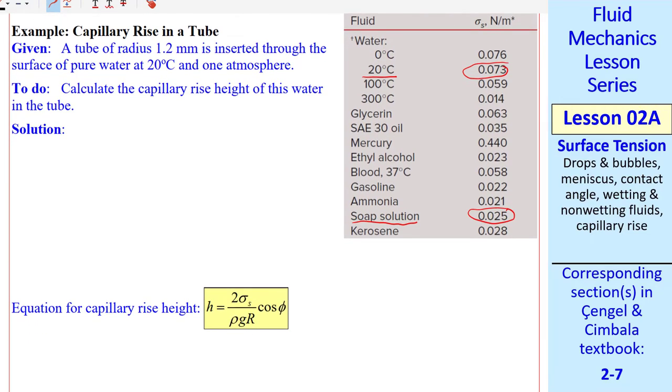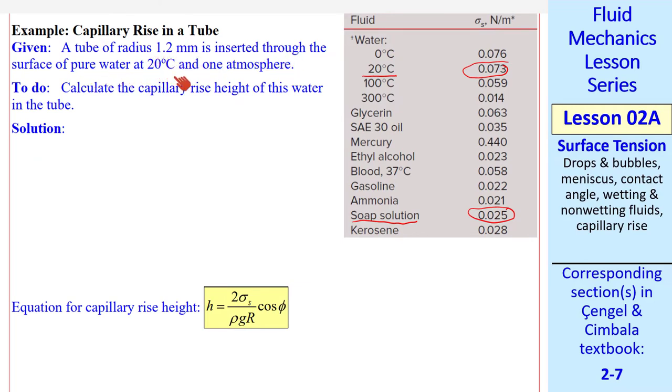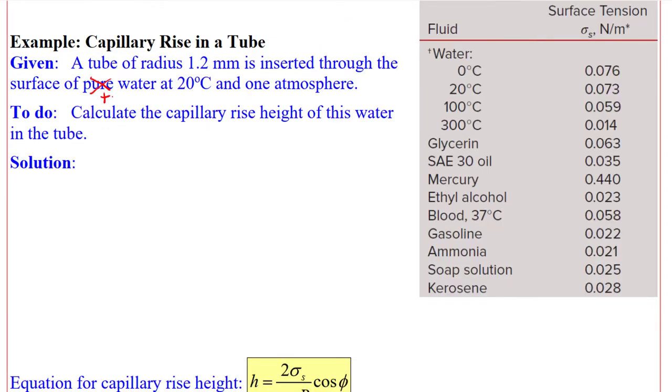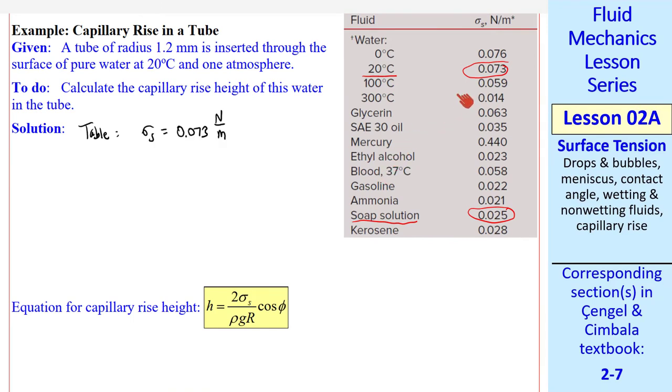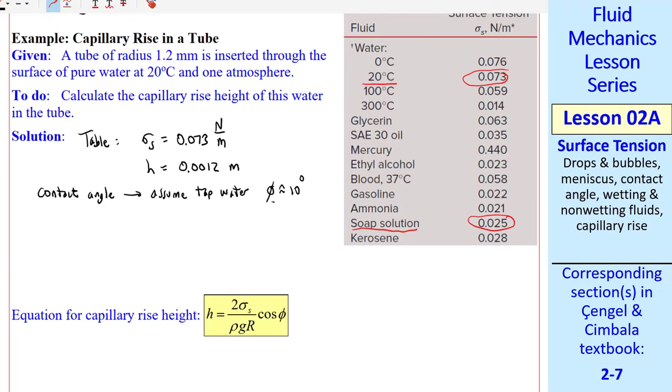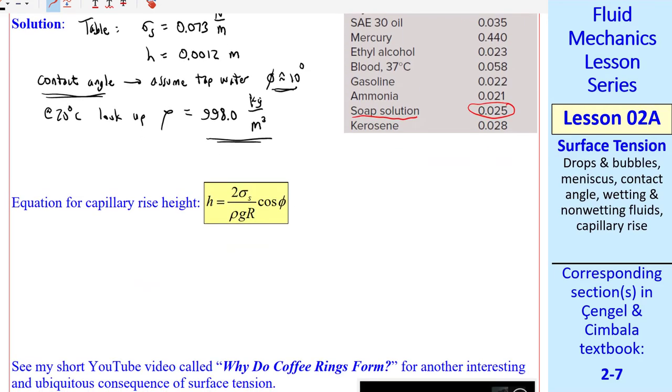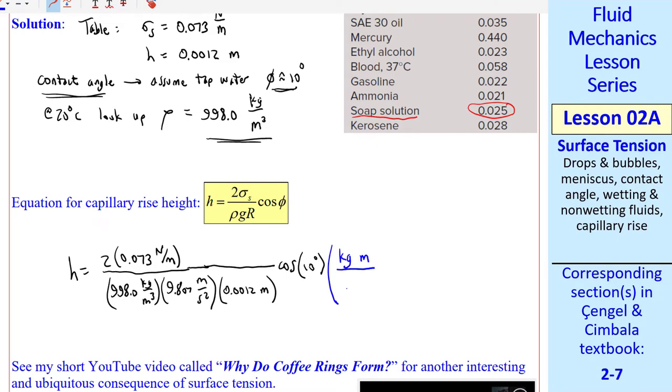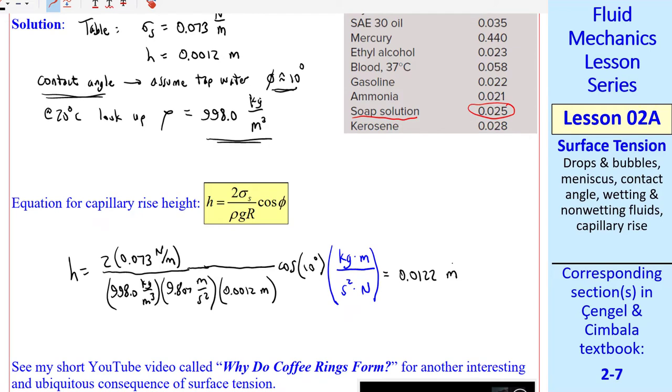Let's do a quick example capillary rise in a tube. A tube of radius 1.2 millimeters is inserted through the surface of pure water at 20 degrees C in one atmosphere. I'm going to change this to tap water. We want to calculate capillary rise height. We'll use sigma s from the table, 0.073 newton per meter. I'll convert h to meters. For the contact angle, I'll assume tap water with a phi of about 10 degrees. As I said previously, this value will vary depending on the impurities in the water. We also look up the density of water at 20 degrees, 998.0 kilogram per meter cubed. Now we have everything we need to plug into this equation. 2 times sigma s over the density, gravitational constant, and r, cosine phi. I'll multiply by a unity conversion factor. Newton is a kilogram meter per second squared. This gives me 0.0122 meters. My final answer is h is 1.2 centimeters to two significant digits, which is about all we can hope for in this problem. Notice that all the dimensions cancel except these three, which turn out to be meters on the top, which is what we want.